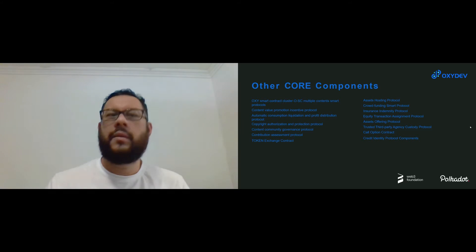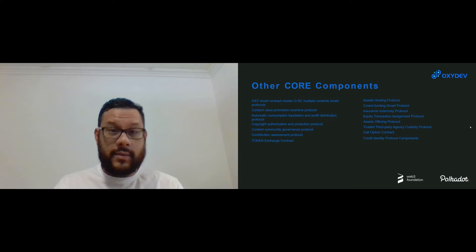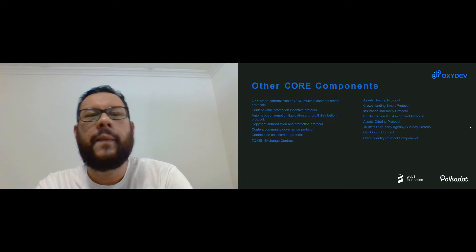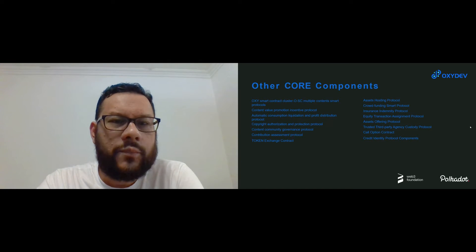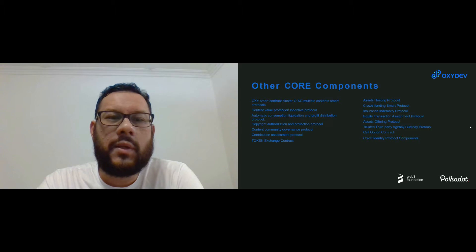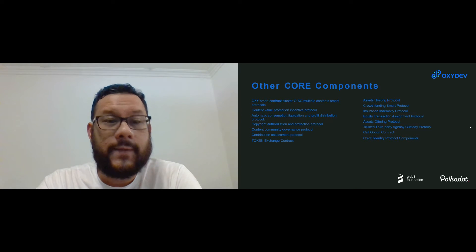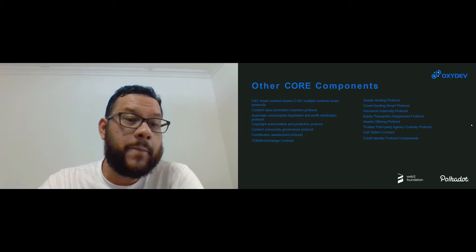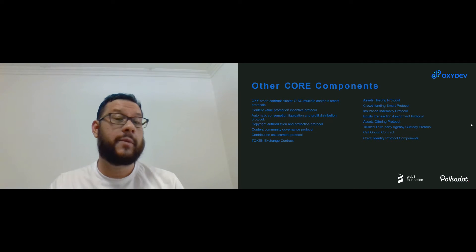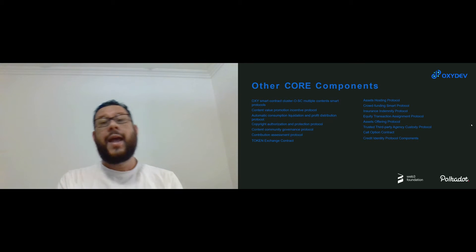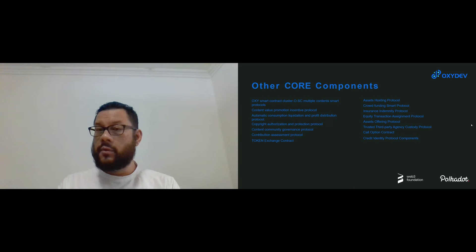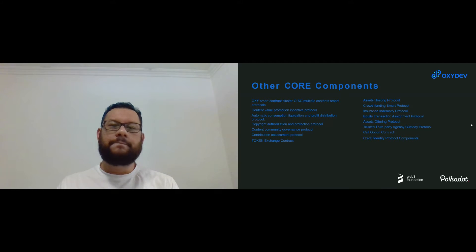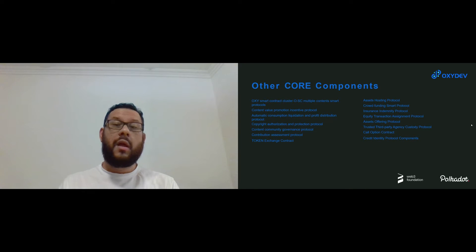There are other component protocols that run within the system: the Oxy smart contract clusters protocol, content value promotion incentive protocol, automatic consumption liquidation and profit distribution protocol, authorization and protection content community governance contribution assessment protocol, token exchange contract, asset hosting protocol, crowdfunding smart protocol, insurance indemnity protocol, equity transaction assignment protocol, assets offering protocol, trusted party agency custody protocol, call options, and credit identity protocol components.